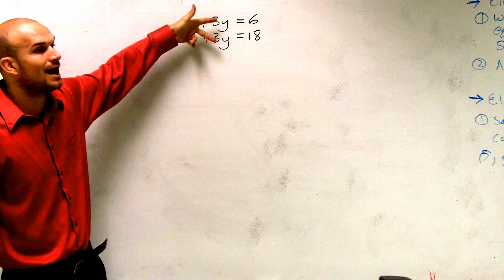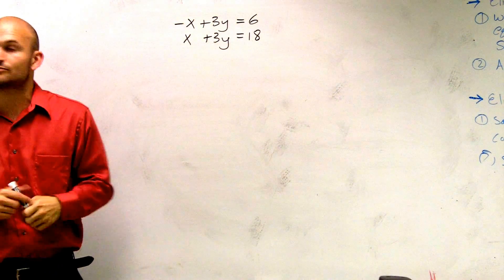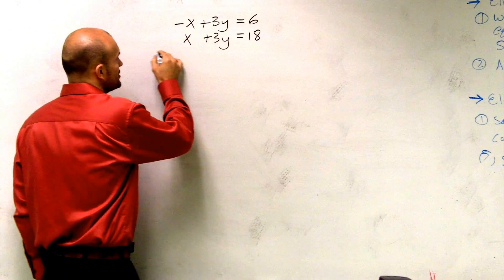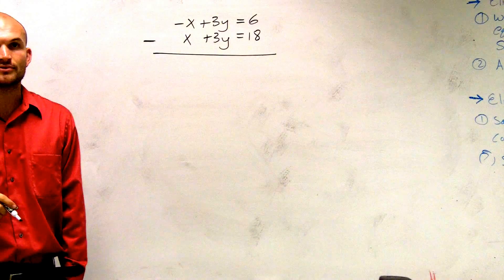So I notice here that y both have a 3 in front and their exact same sign. Therefore, I can use elimination by subtraction. So I'm simply going to put a subtraction sign, and I'm just going to subtract my variables.